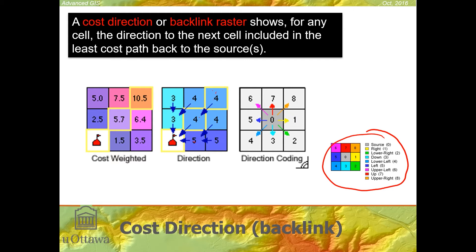Once we have the cost direction raster — also called a backlink raster — that's the raster required to determine the actual path. If you're interested in finding a path from point B back to point A in the least costly possible way, this gives you that physical path, because it's the one capable of joining the cells together to get back to the source.